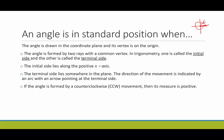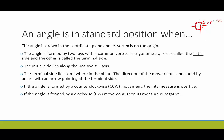If the angle is formed by a counterclockwise movement, then its measure is positive. So the first one I drew, moving counterclockwise, would have a positive angle measure. If the angle is formed by a clockwise movement, then it is a negative angle measure — so moving clockwise gives a negative angle measure.